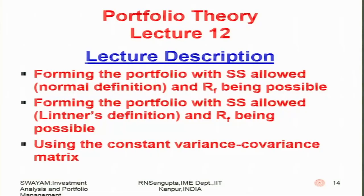Under lecture 11, portfolio theory, we will consider the extension of the single index model into the multi-index model, different averaging techniques, and how the constant variance-covariance model can be utilized in solving portfolio problems considering diversification. We will formulate portfolios with short selling not allowed and riskless lending/borrowing possible under constant variance-covariance models. In lecture 12, we will consider portfolios with short selling, riskless lending/borrowing possible, using different combinations — short selling allowed with Lintner's definition, and then apply the constant variance-covariance matrix to solve problems accordingly.